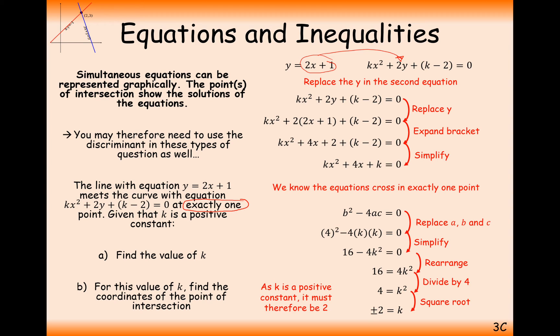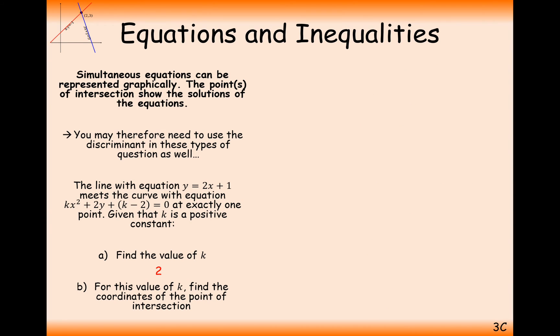As k must be positive, it does say in the question here, given that k is a positive constant, we have to take the positive value of k here. So, given that we know that k is 2, we're going to move on to part b of this question, which is find the value of k. For this value of k, find the coordinates of the point of intersection.